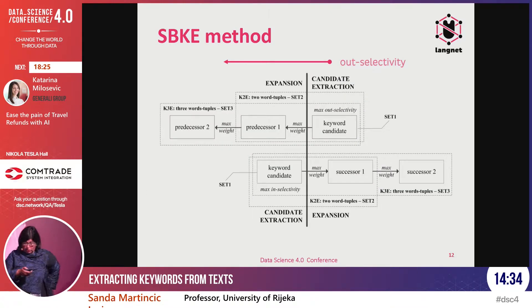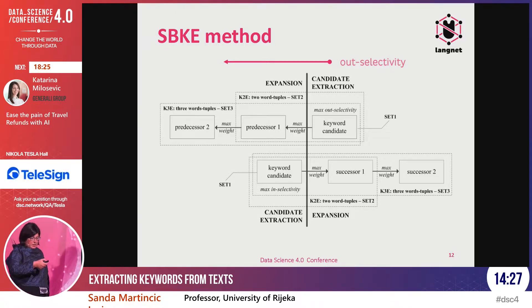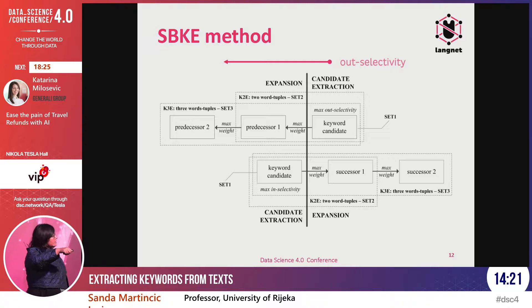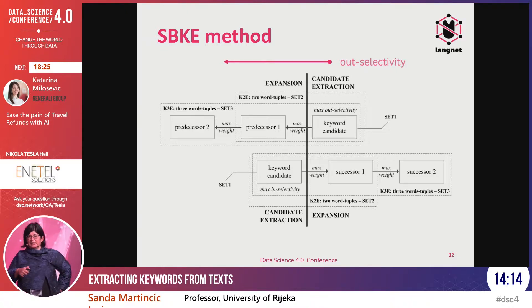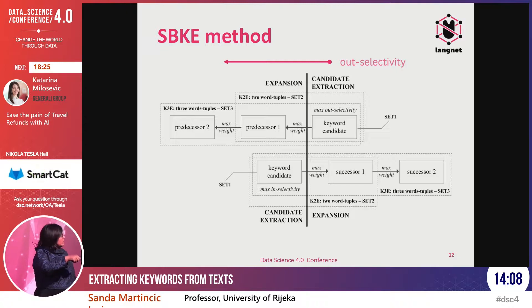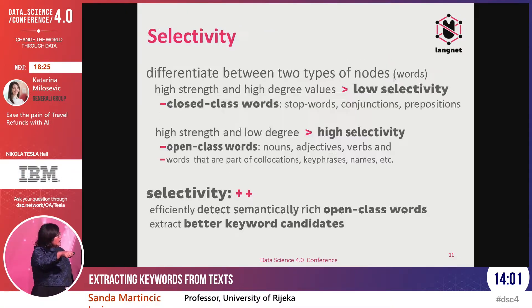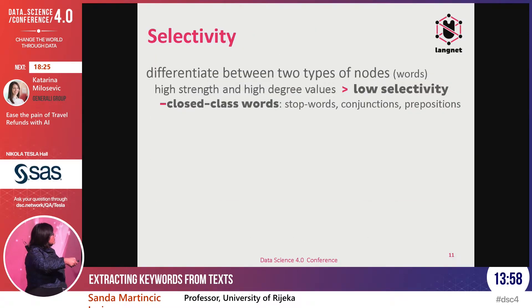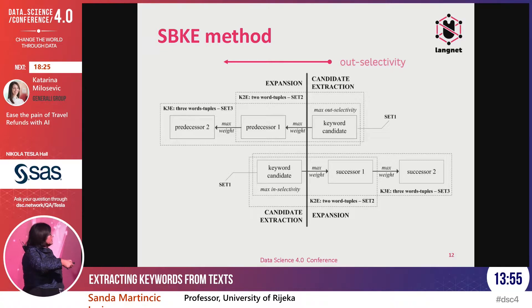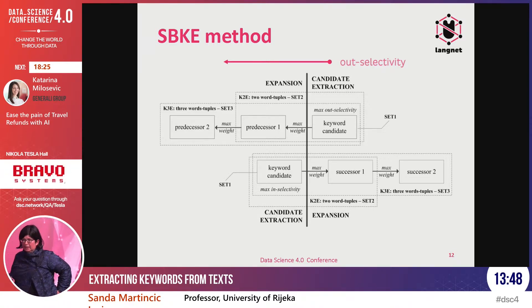Selectivity turned out really nicely in this experiment, and we developed the whole method around it. In the first step, we detect which words or nodes have the highest selectivity value. Then we propagate the weights to pairs and triples of words depending on the direction — incoming or outgoing — of links. There is also a possibility to maximize weights, meaning that when selecting the second word, we select the highest bigram for that word during that process.